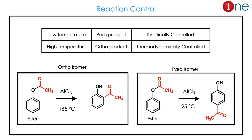You should know the reaction control. At room temperature, the para product is always formed — it is kinetically controlled. At high temperature, the ortho product is formed — it is thermodynamically controlled. The reason may be due to steric effects, because the ortho position is sterically crowded.